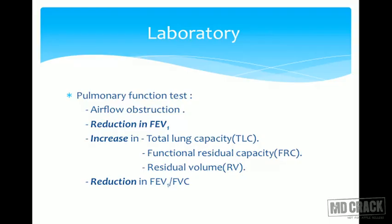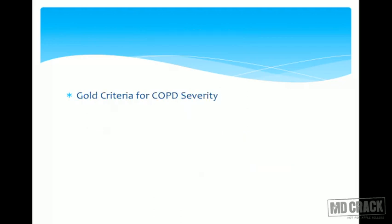COPD is a clinical diagnosis. There should be a history of smoking, and airway obstruction should be demonstrated using spirometry or pulmonary function tests. Important parameters are FEV1 and the ratio of FEV1 to FVC. There will be a reduction in FEV1, an increase in TLC, FRC, and RV — all due to hyperinflation — and the FEV1/FVC ratio will naturally decrease.